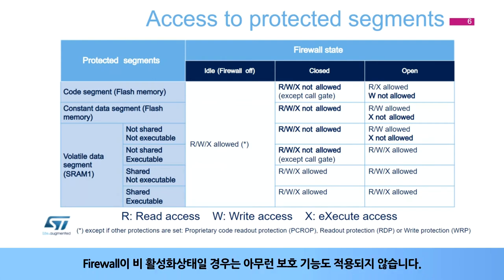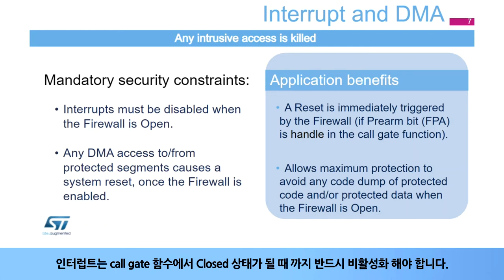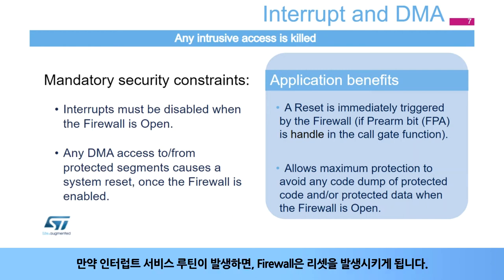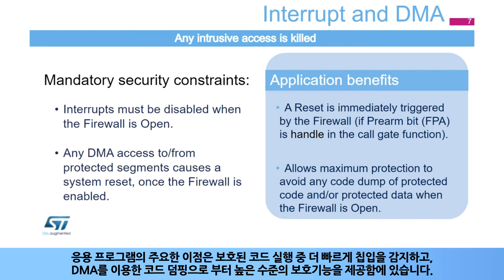When the firewall is disabled or closed, there is no protection. Specific constraints must be respected when enabling the firewall: interrupts must be disabled from the call gate entry sequence until the firewall switches back to the closed state. If an interrupt service routine or ISR occurs, the firewall generates a reset. All DMA access to and from the protected segments is not allowed and is rejected by the firewall with a system reset. The application benefits are mainly to detect an intrusion faster during the protected code execution and to offer a very high level of protection against code dumping using the DMA.